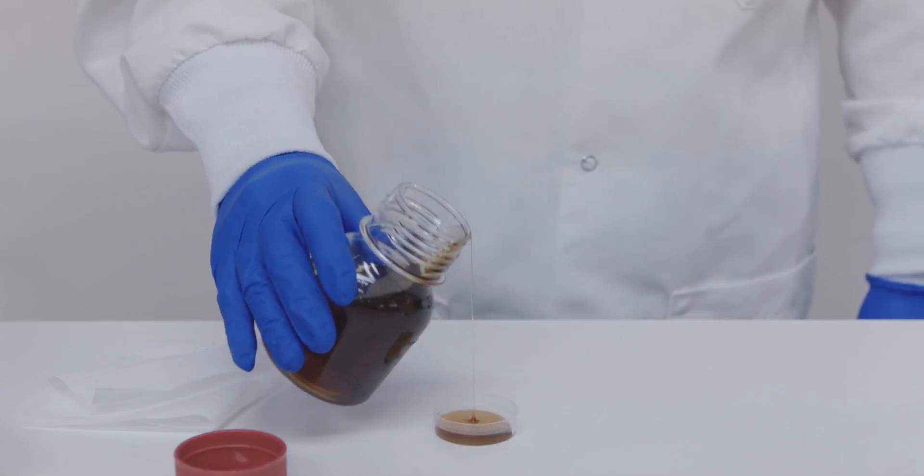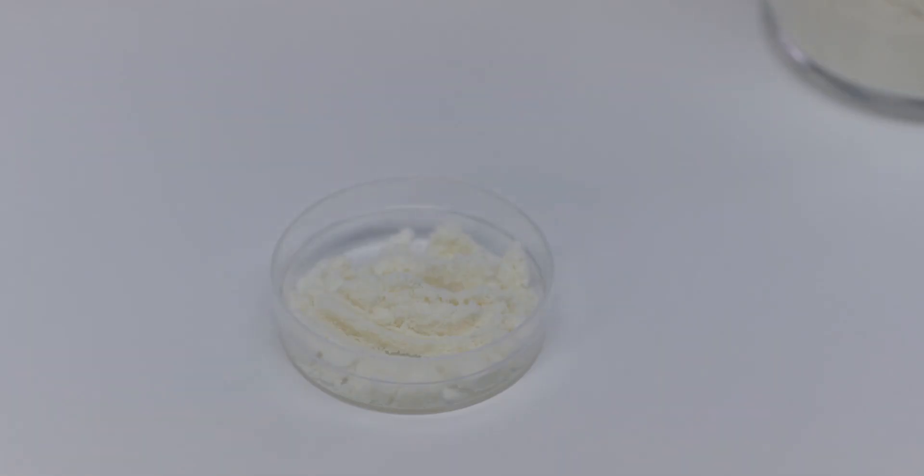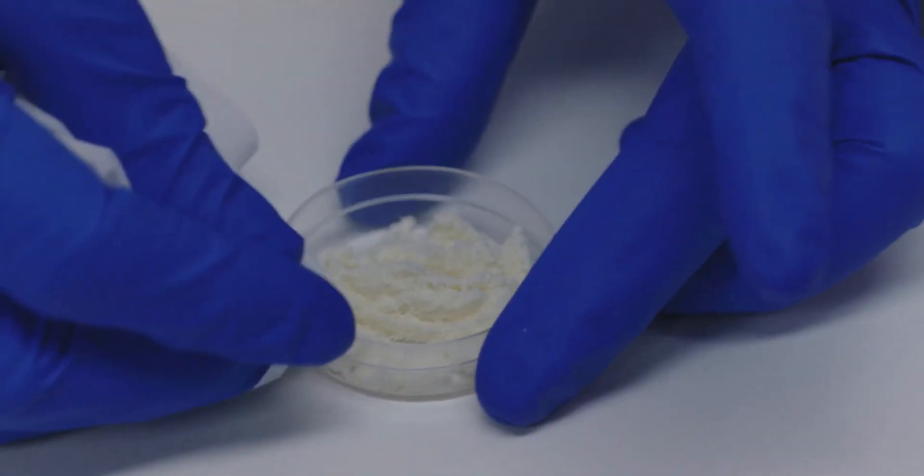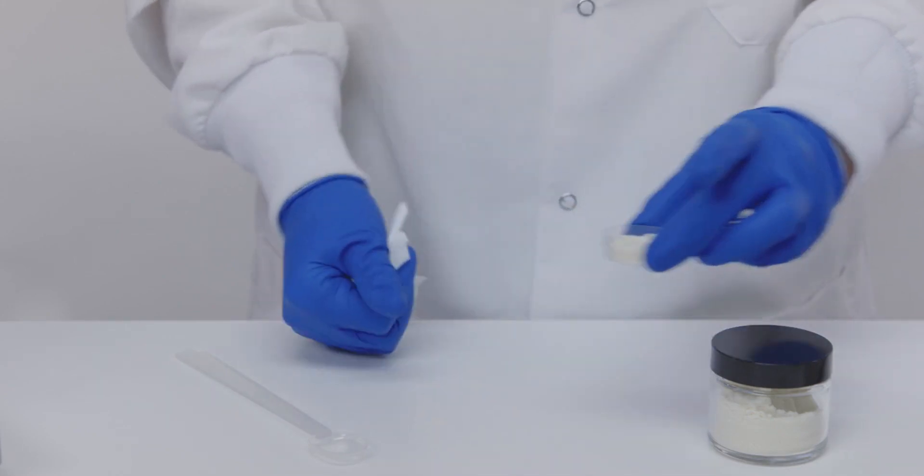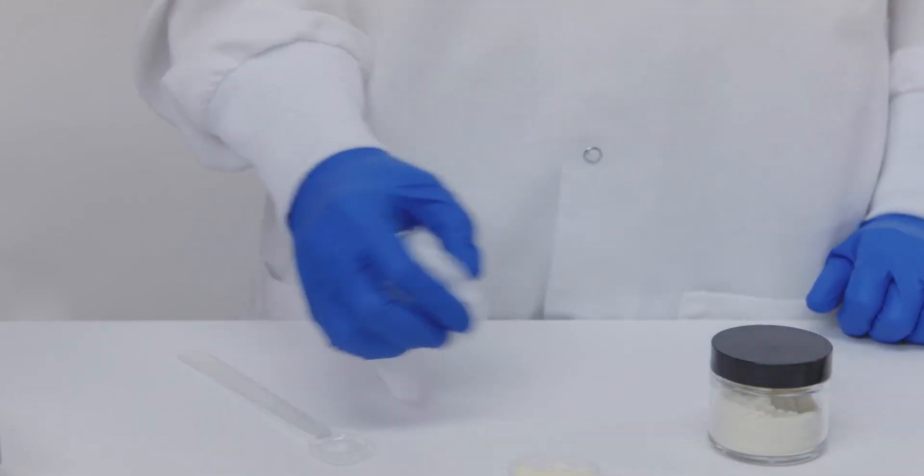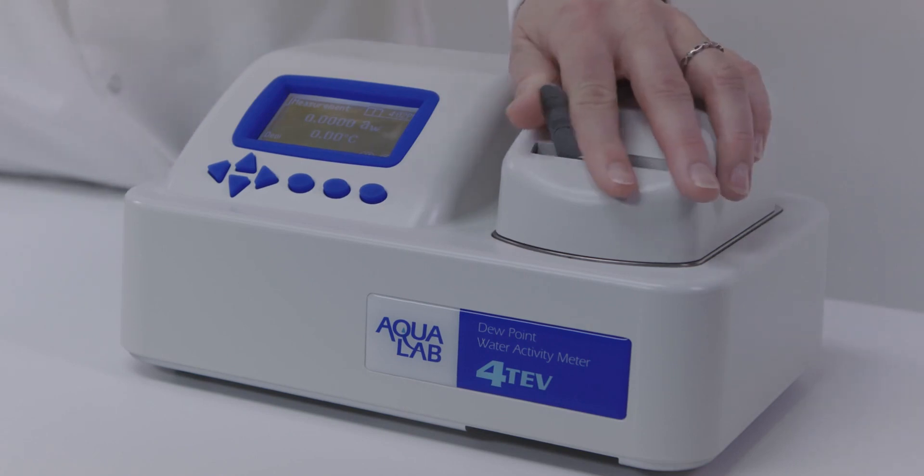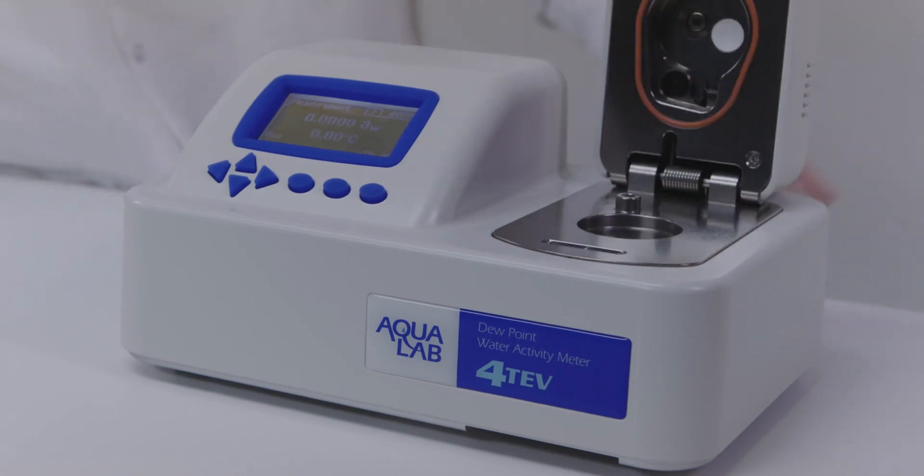Fill your sample cup no more than half full. Wipe the bottom, the edges, and the rim of your sample cup with a kimwipe before putting it in the instrument, so you don't contaminate the sample chamber. Even small amounts of water or contamination can significantly affect the reading.